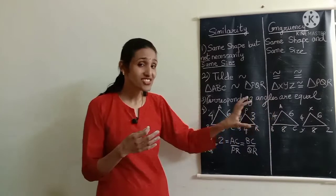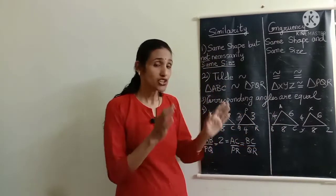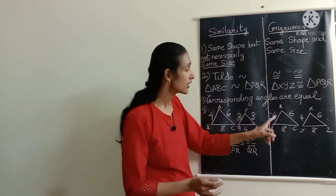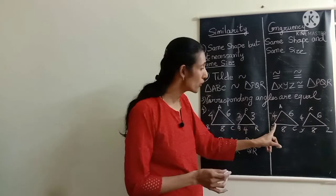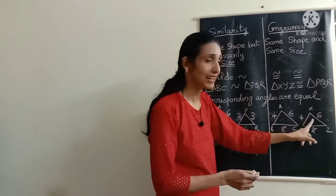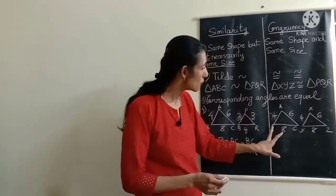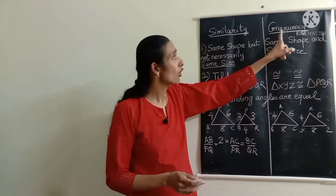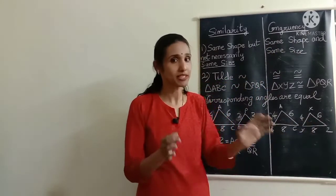Congruency is more strict than similarity. For two figures to be congruent, the corresponding sides have to be equal — proportionality alone will not work. So for triangles ABC and XYZ: AB = XY = 4, AC = XZ = 6, and BC = YZ = 8. They have to be equal because for congruent figures the size also has to be the same, so the corresponding sides must be the same.